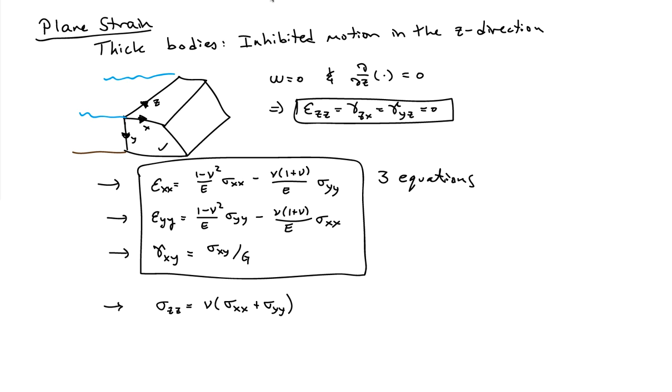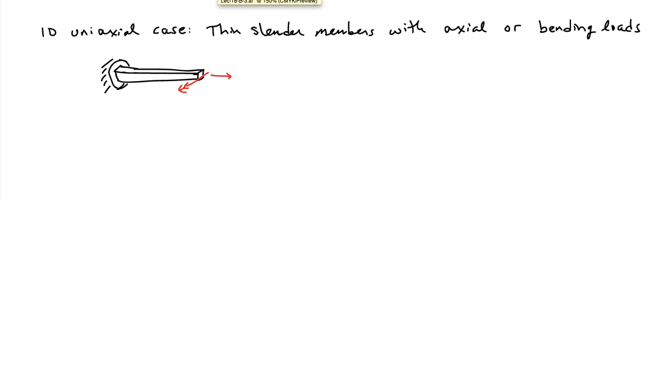There's one last special case I want to discuss, which is the one-dimensional special case. This is when you have uniaxial stresses in the system. This applies when you have thin, slender members with axial or bending loads. The dimensions of the object in the x direction are large, but the dimensions of the object in the transverse direction, say the y and the z, are small.